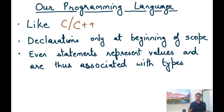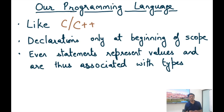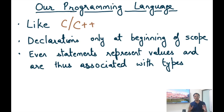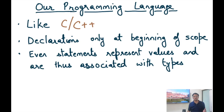In our language, statements also represent values and are associated with types. In C or C++, a statement is not associated with a value — expressions compute values, statements do not return one. In our language, we eliminate that distinction: we treat statements as expressions. Everything — including expressions ending with a semicolon or a list of statements — is called an expression. For example, the body of an entire function can be thought of as a single expression, whereas in original C/C++ it would be called a statement.